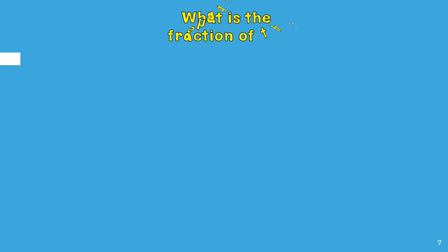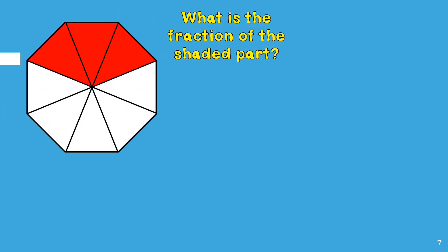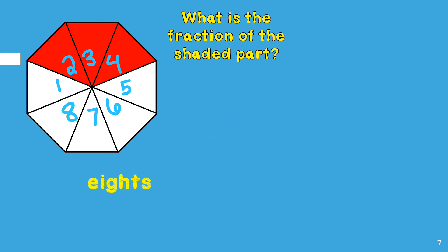Let's continue practicing with fractions. What is the fraction of the shaded part? To figure out the fraction I will first count the number of total parts: one, two, three, four, five, six, seven, eight. Since this fraction is partitioned into eight parts it is called eighths. This word eighths represents the total parts in my figure. There are eight total parts.